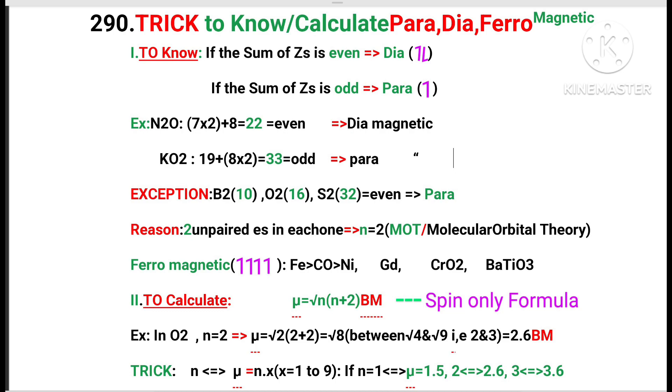Example: N2O, nitrous oxide, total electrons are 22, it is even number, therefore it is diamagnetic in nature. Potassium superoxide, KO2, total electrons are 23, it is odd number, implies it is paramagnetic substance.